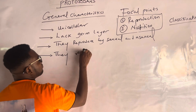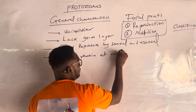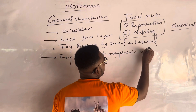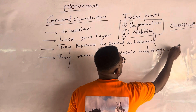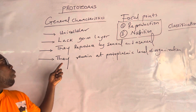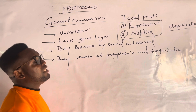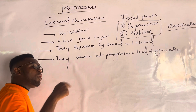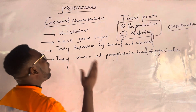They remain at the protoplasmic level — protoplasmic level of organization. This has been in past questions already: why do protozoans remain at the protoplasmic level of organization? The answer is because they lack organelles. They lack organelles, and that is how they remain at the protoplasmic level of organization.